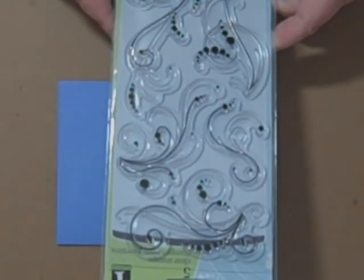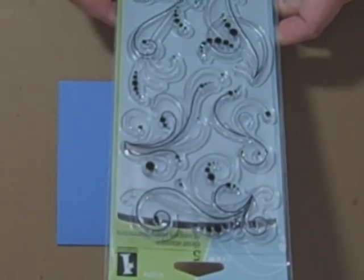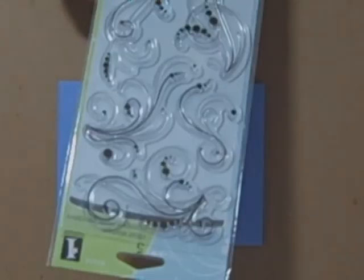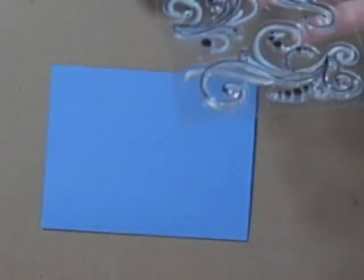Now I have this cute stamp set that I bought here from Inkadinkadoo. It's just some different dotted flourishes. And I just realized that I didn't bring a big enough acrylic block over here with me, so we're going to have to make do here. These videos are harder to make than one would think.